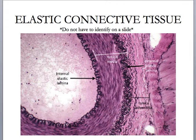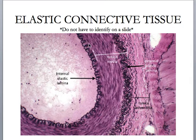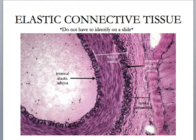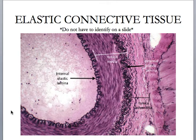Over here, all of this is also elastic tissue. So you don't have to identify this on a slide. I just want to make you aware that you can find elastic connective tissue or elastic fibers as part of other organs. Large arteries have to withstand lots of pressure from the blood that's pulsing through them. They have to be able to expand when blood is present and then recoil to their original size so they can propel blood forward. This is connective tissue embedded within a separate organ.